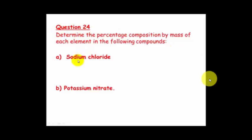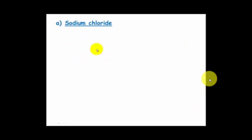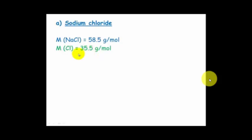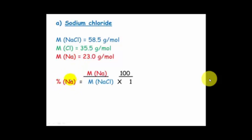Have a go at working out question 24, which asks you to find the percentage composition of sodium chloride and potassium nitrate. Pause this and check your answers. For sodium chloride, the total molar mass is 58.5 — chlorine is 35.5 and sodium is 23.0. The percentage of sodium is 23 divided by 58.5 times 100, which equals 39.3%.